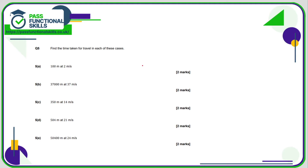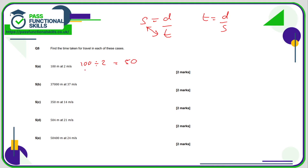For question number 5, we need to work out the time taken. Speed is distance divided by time, and we can swap the S and the D around, so time is distance divided by speed. In 5A: 100 divided by 2 is 50 — the distance is metres and speed is metres per second, so the time is in seconds. For B: 37,000 divided by 37 is 1,000, and again that's seconds.